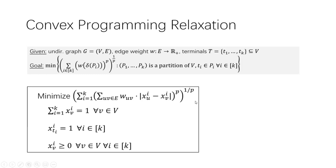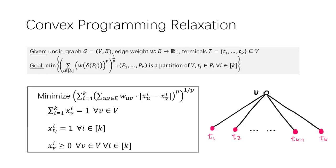There is a simple example showing a large integrality gap: simply take a star graph where the leaves are the terminals. It is easy to show the integrality gap of this instance is k raised to (1 minus 1/p). When specialized to p equals one, this convex program gives the CKR relaxation.